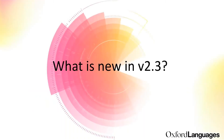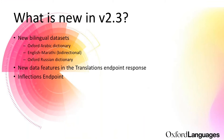So what is new in version 2.3? We launched three new data sets: Oxford Arabic Dictionary, English-Marathi, and Oxford Russian Dictionary. All three are bidirectional — so English-Arabic, English-Russian, English-Marathi, and also Arabic-English, Marathi-English, and Russian-English. We also improved the response of the translations endpoint, adding more features and data features like synonyms, inflections, more phrasal verbs, compounds, and different derivatives. And we launched the new inflections endpoint.